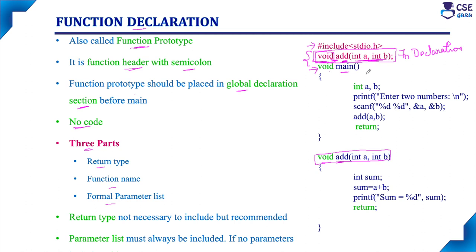We have to use valid symbols only: uppercase letters A to Z, lowercase letters A to Z, digits 0 to 9, and the underscore symbol. The first character should be a letter or underscore. The maximum length is 31 characters. We should not use keywords as function names, and identifiers are case sensitive.